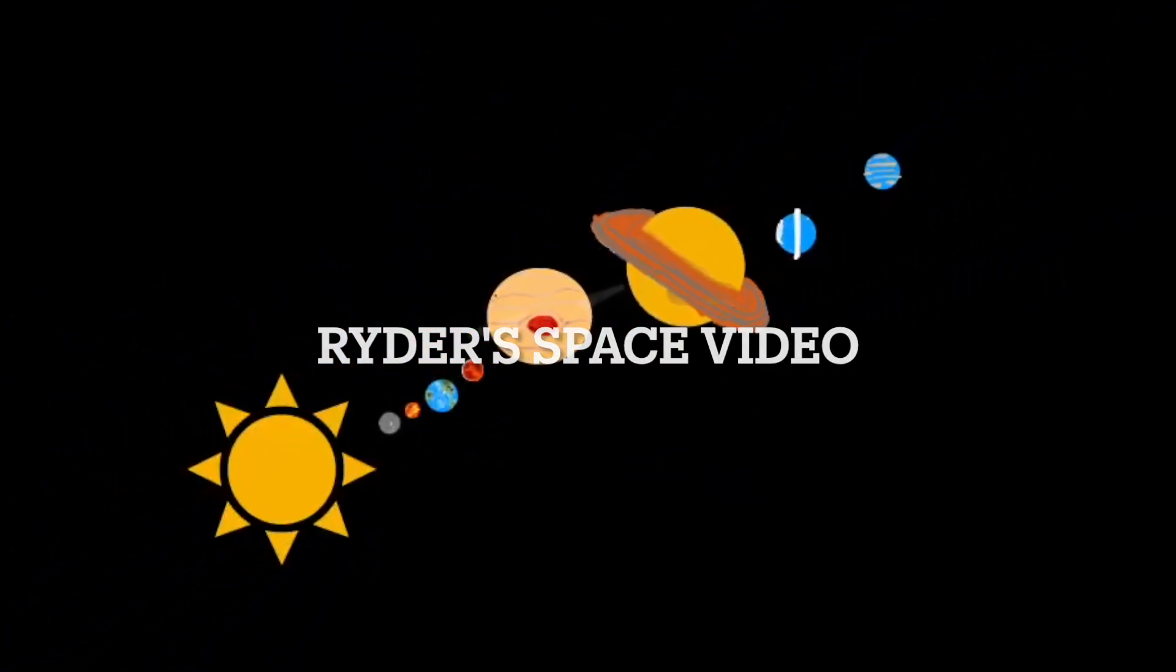Rider Space Video! This is our solar system. There are eight planets that circle around the sun. It's called an orbit.